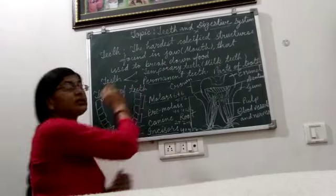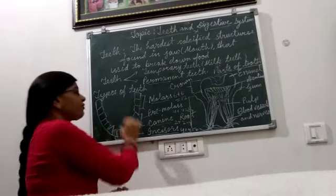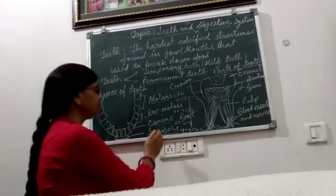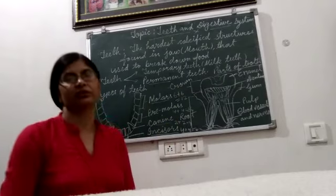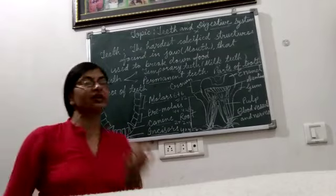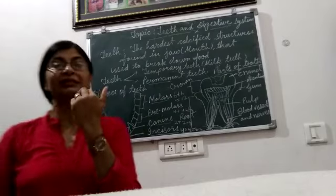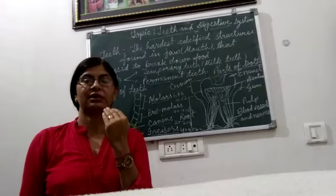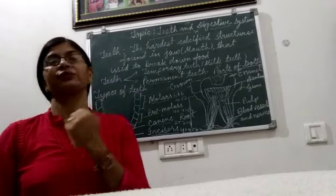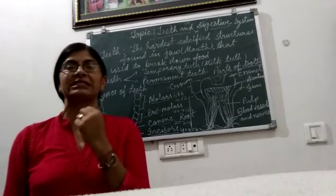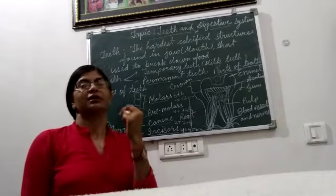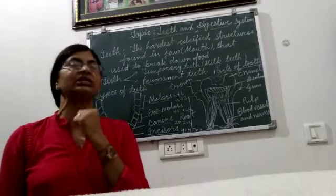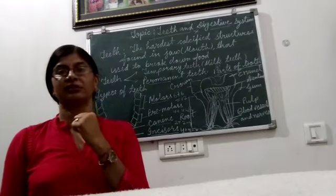Now, types of teeth. There are 4 types of teeth, divided according to their function: incisors, canines, premolars, and molars. Incisors are the front 4 teeth — 4 teeth in each jaw, meaning 8 total — that are flat, broad, and sharp. They help us to cut the food. These are the incisors, and they are 8 in number across both jaws, with 4 in each jaw.